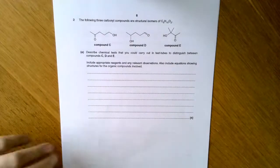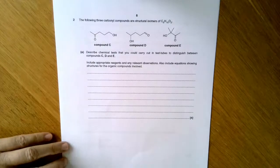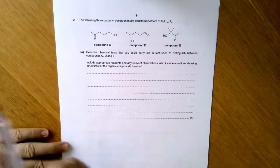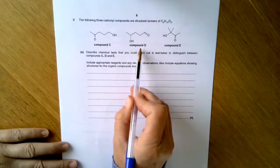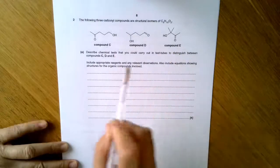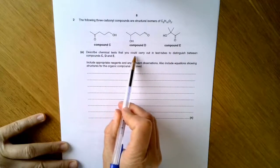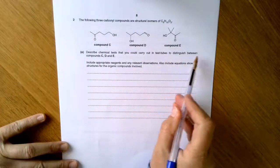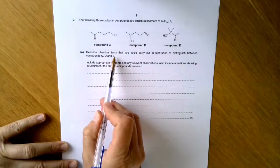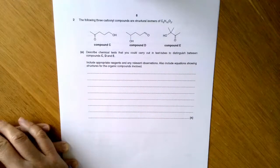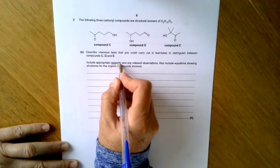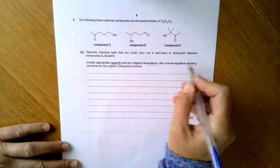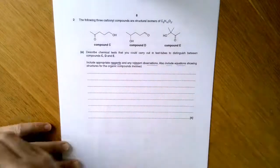This clip looks at the assessment question that goes with aldehydes and ketones. We're being given compounds C, D, and E, and we're being asked to describe chemical tests you would carry out in test tubes to distinguish between C, D, and E. So not spectroscopy, things we could do in test tubes. This includes reagents, relevant observations, and also equations.